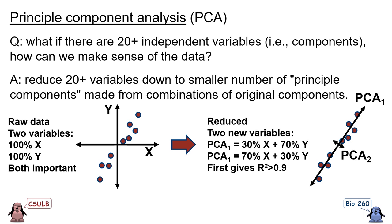In the figure on the left, you can see a plot of raw data, and if we want to describe the pattern, we would have to describe it using both x and y. But we can change these axes, transforming our variables into two new ones. Now the new axis, called principal component 1, which is in the direction of the highest variance, explains most of the variation in the data — as shown by the R-squared being larger than 0.9. Principal component 2 is minimally important. We have reduced the number of important variables from 2 down to 1.